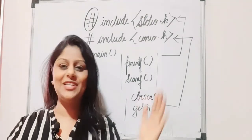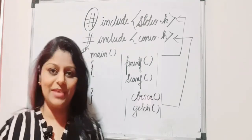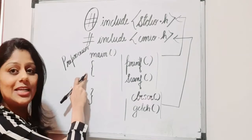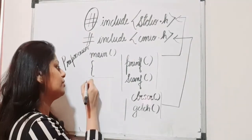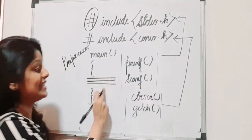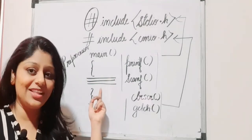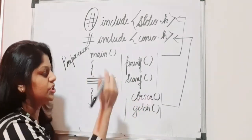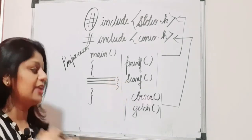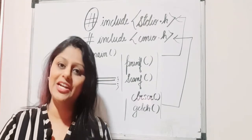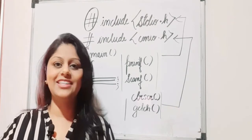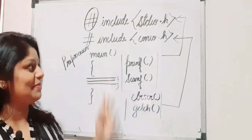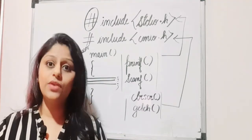Next is the main function. Everything that needs to be executed must be written inside main(). We use opening and closing curly braces. All statements related to the output go inside these curly braces. Every statement inside main must end with a semicolon — if it doesn't, the compiler will show an error saying the statement was not ended correctly.